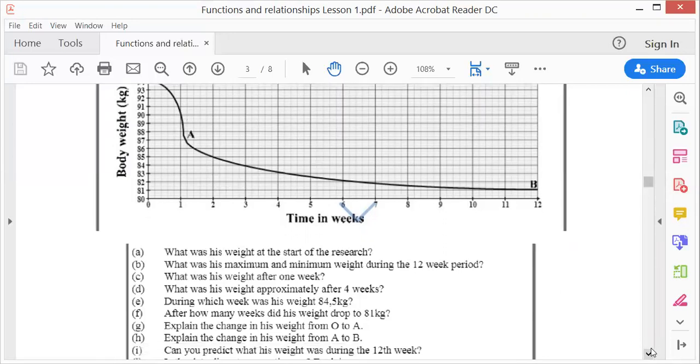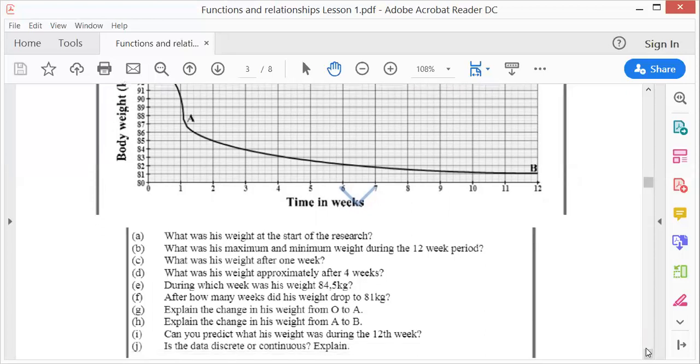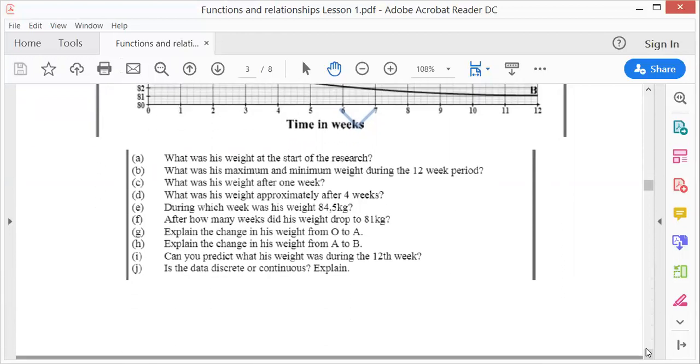Right. And can you predict what his weight was during the 12th week? Of course, during the 12th week, between the 12th week, of course, like we said, 81 kilogram, isn't it? Is the data discrete or continuous? Well, we know it's a continuous line. So it's definitely continuous. There are no dots. Okay, cool.